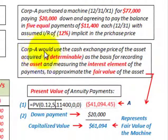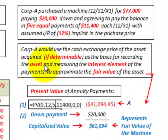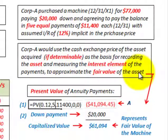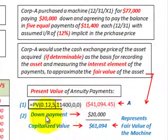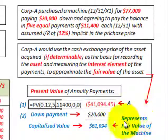Corporation A would use the cash exchange price of the asset acquired, if determinable, as the basis for recording the asset and measuring the interest element in the payments to approximate the fair value of the asset. We have to deal with the annuity payments and determine their present value, and then add the down payment. Summing those gives us the amount representing the fair value of this machine — that's what we capitalize.